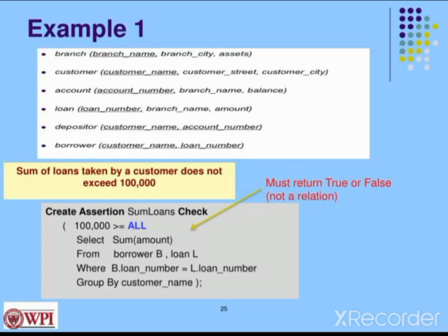We select loans per customer and compare with the limit. The assertion checks the condition and returns true or false. If the total loan for a customer is within the limit, it returns true. The predicate must return true or false.